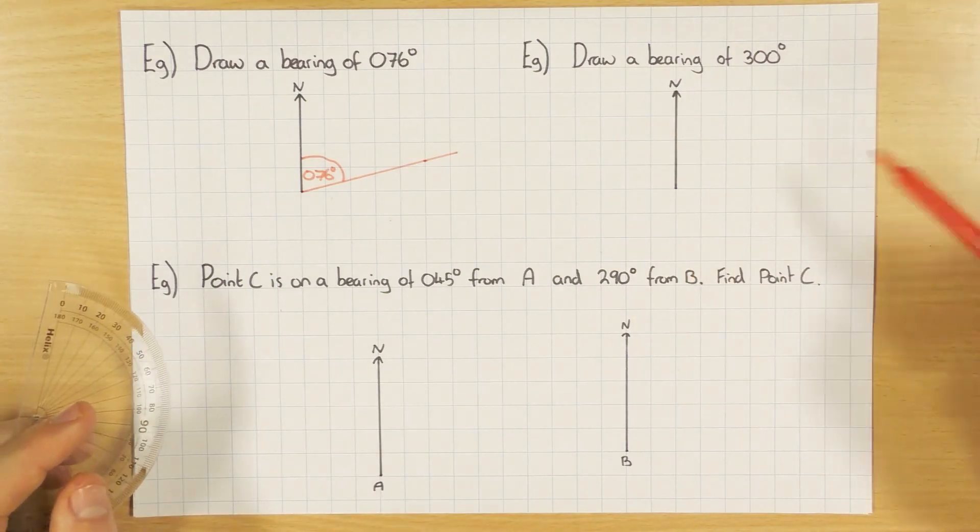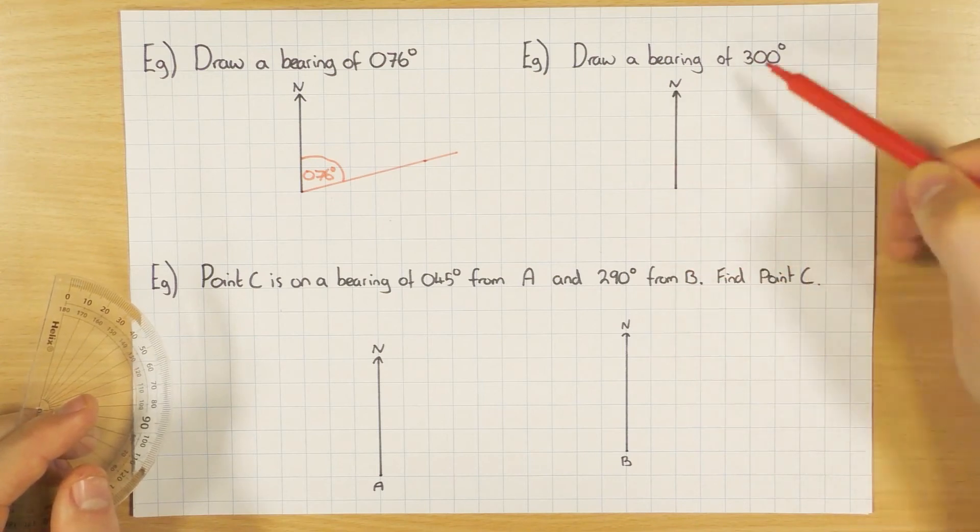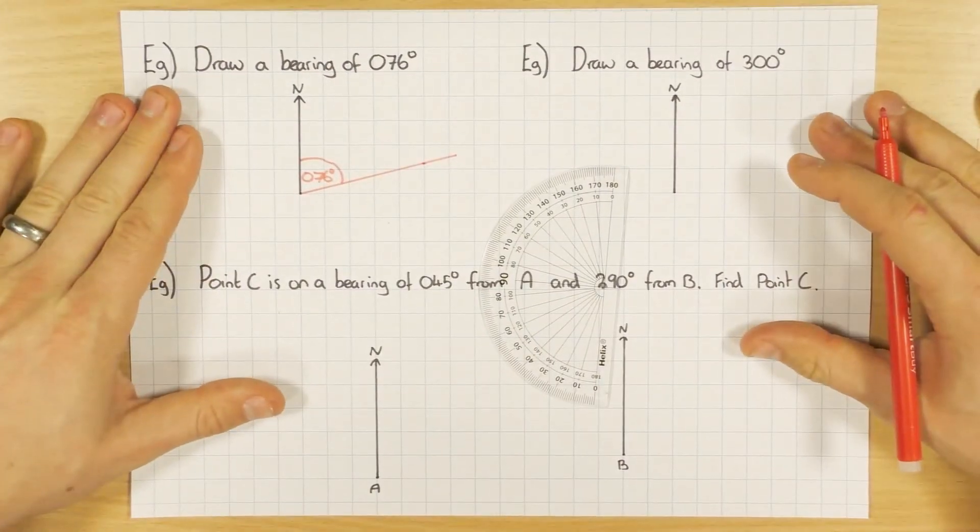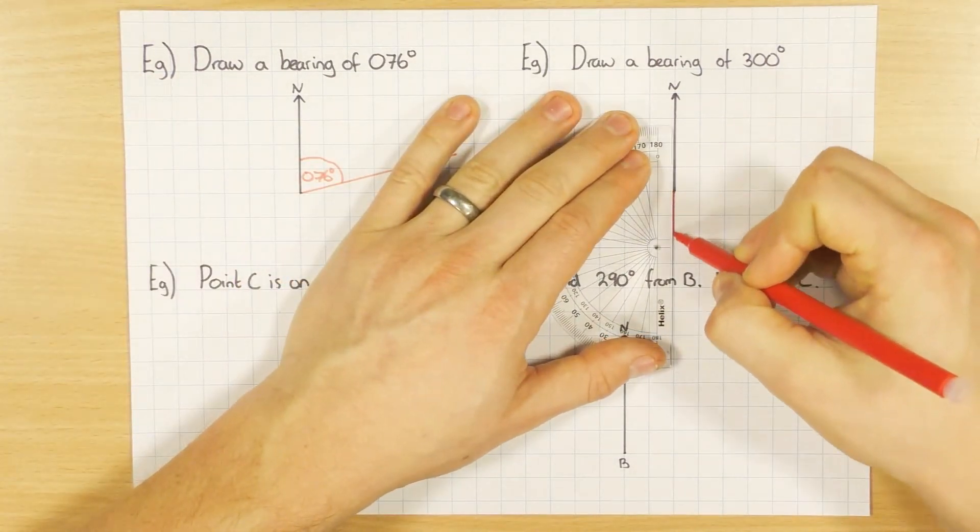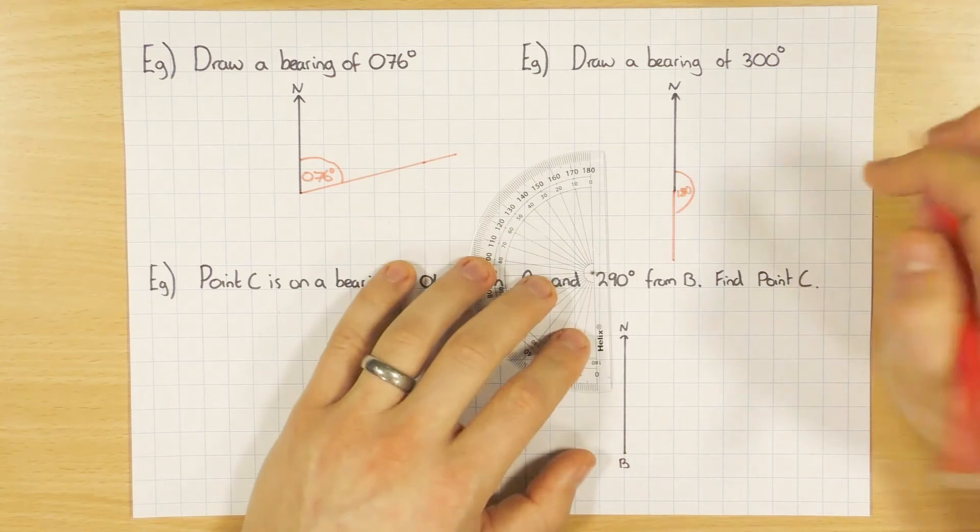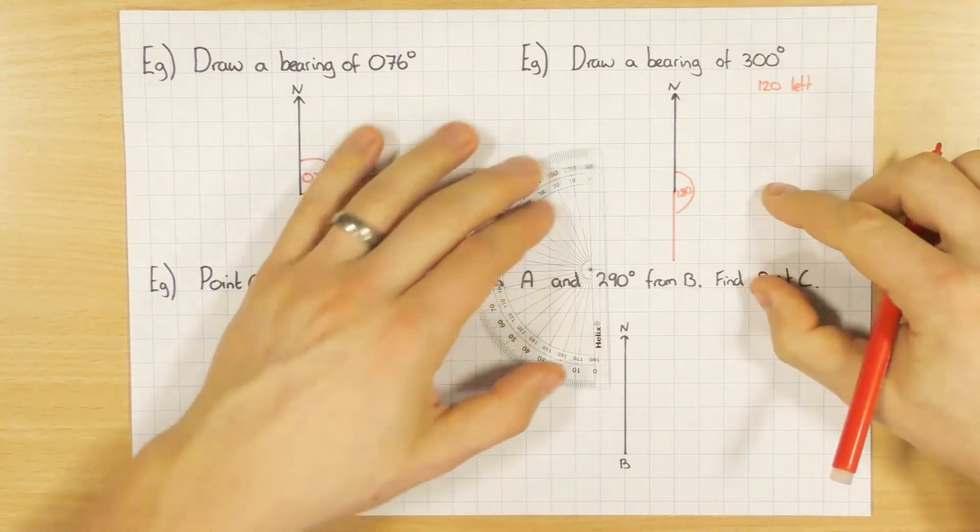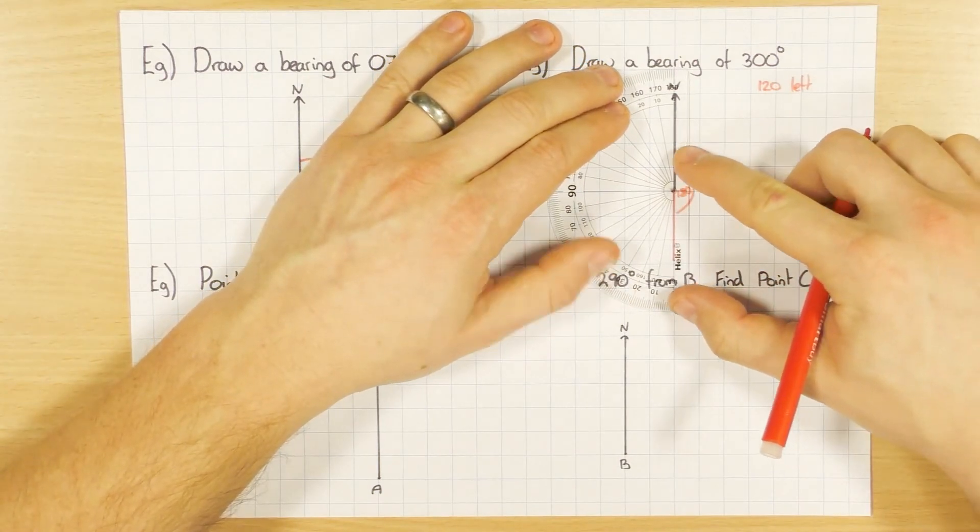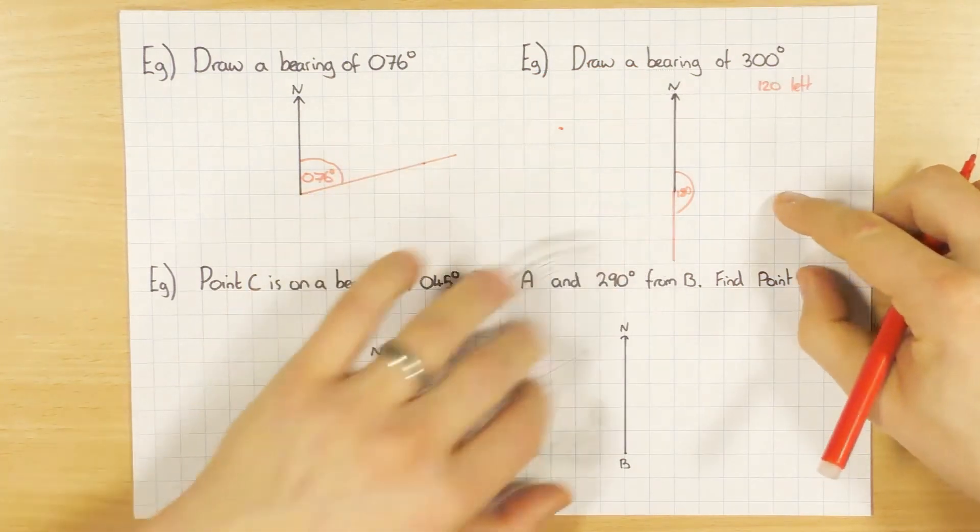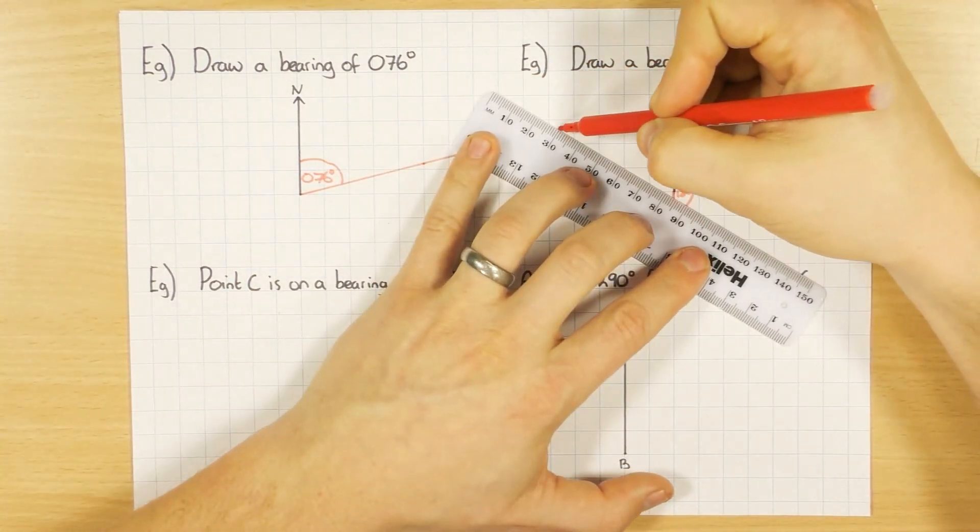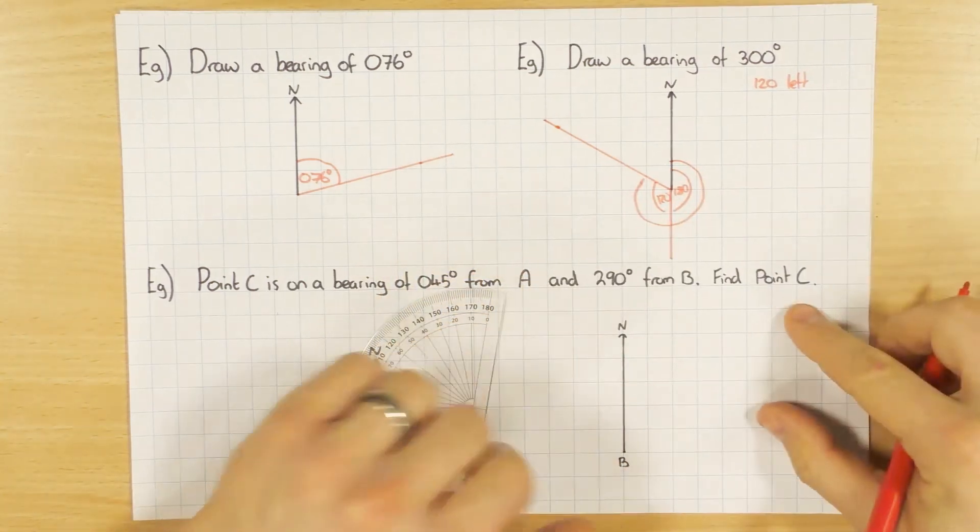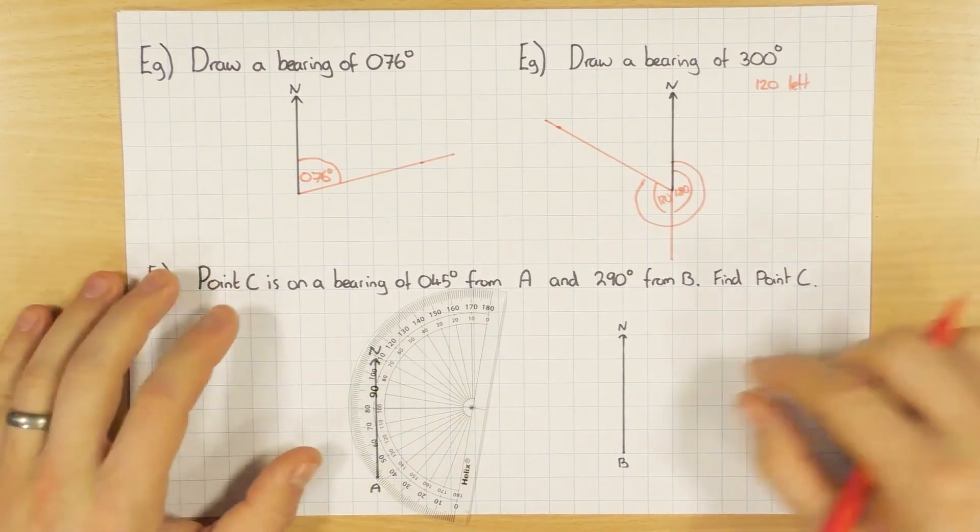This one here, bearing of 300. So you could do 360, which is all the way round, take away 300, which gives you 60, and measure 60, which is the bit you don't want. Again though, I'm going to do it by drawing a south line, because I know that that's 180 degrees. What's left to get to 300? Well it's 120 that's left. So from the south line, I need to go another 120. So again, line it up, zero's on there, all the way round to 120, which is there. Put a little mark, grab your ruler, and line it up. So then this is 120, so in total it's 300. It's entirely up to you if you want to draw the south line or you want to work out what's missing. Both ways work fine.